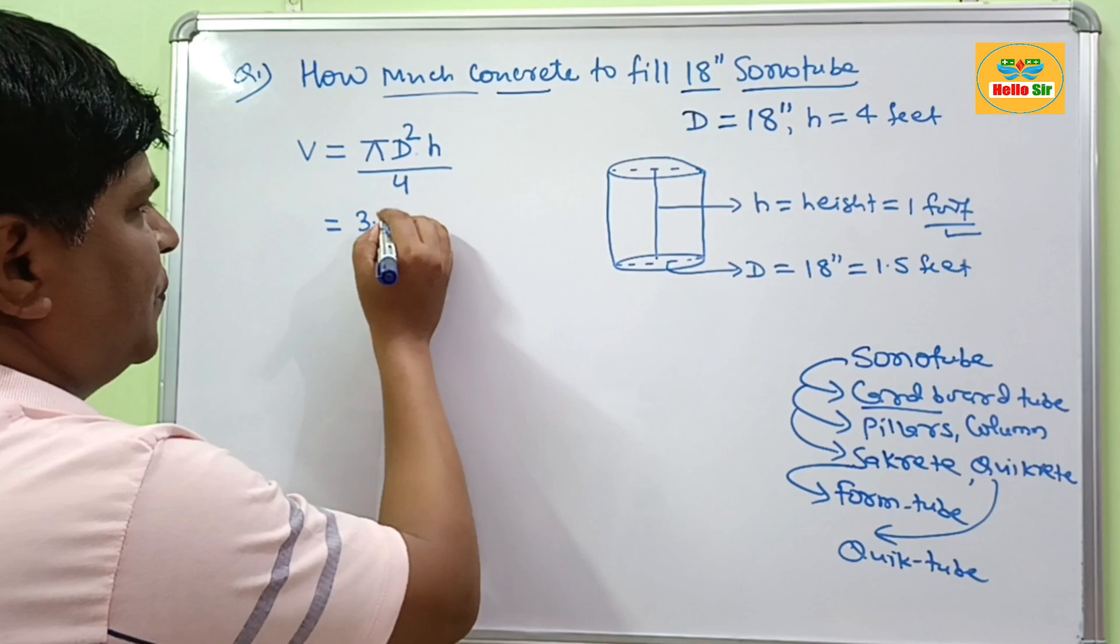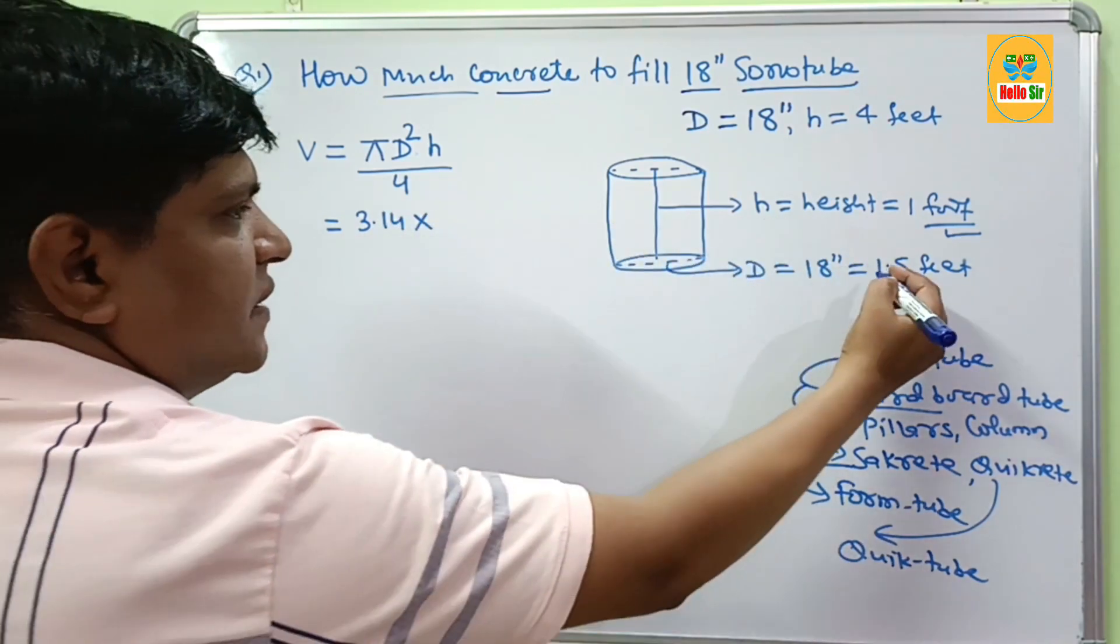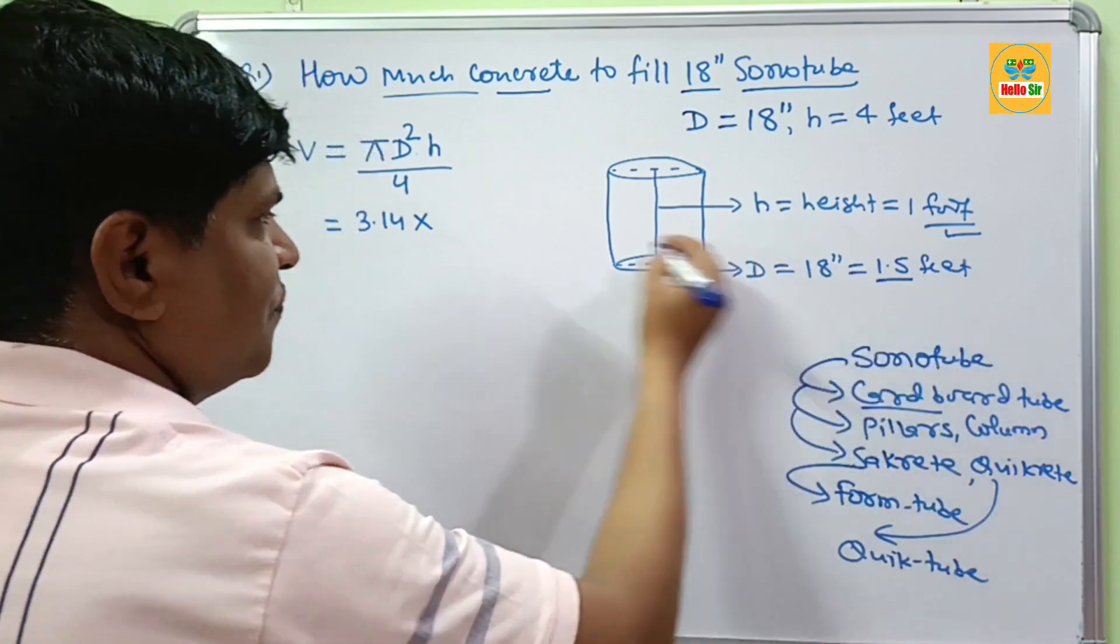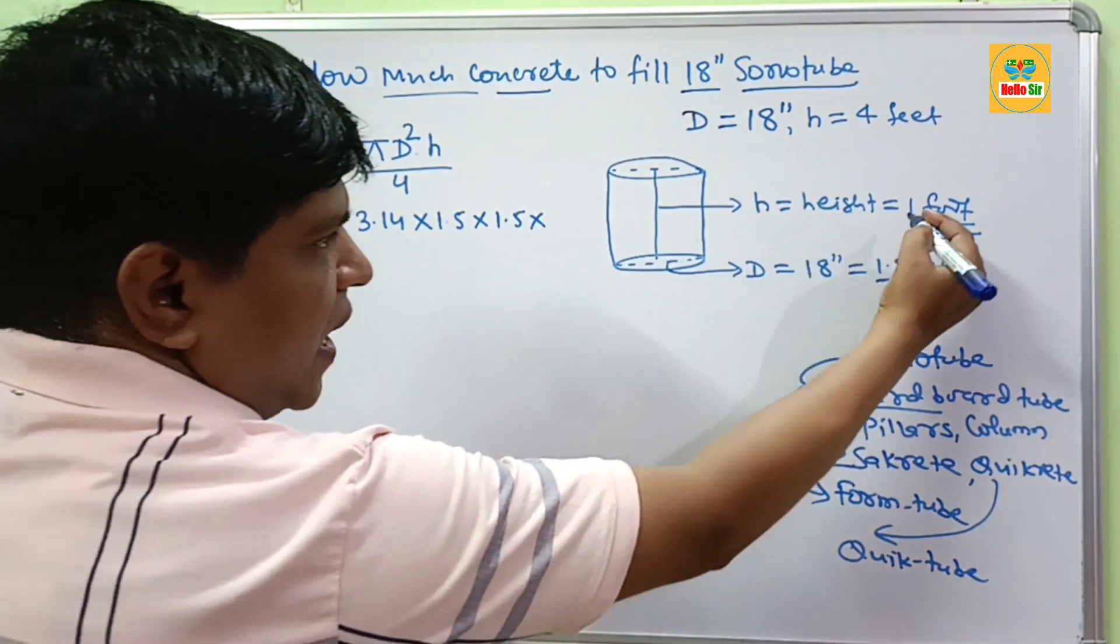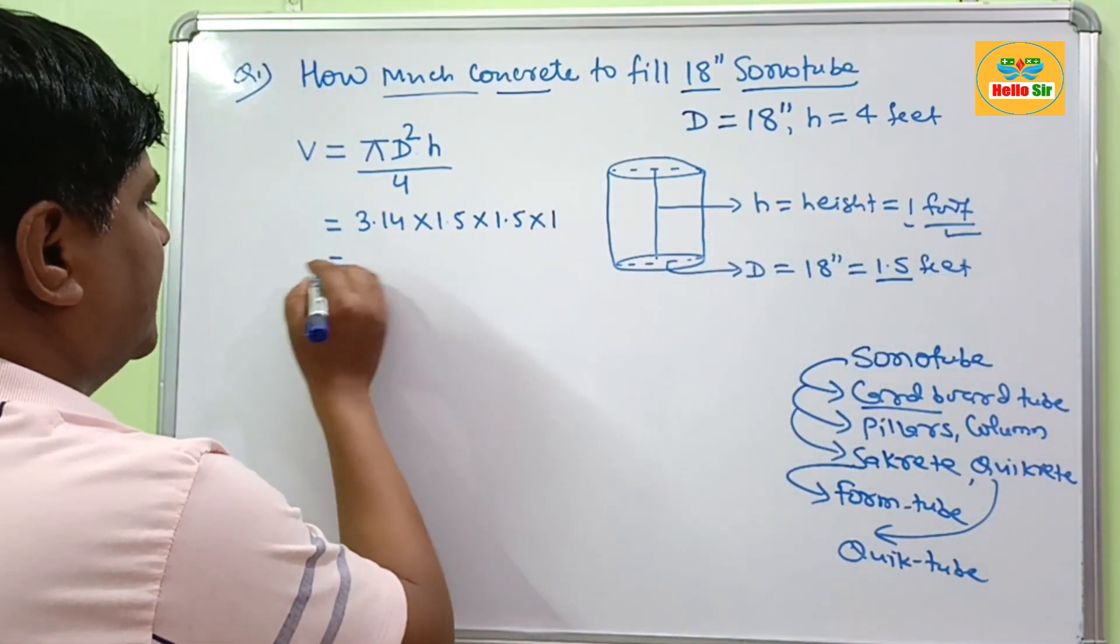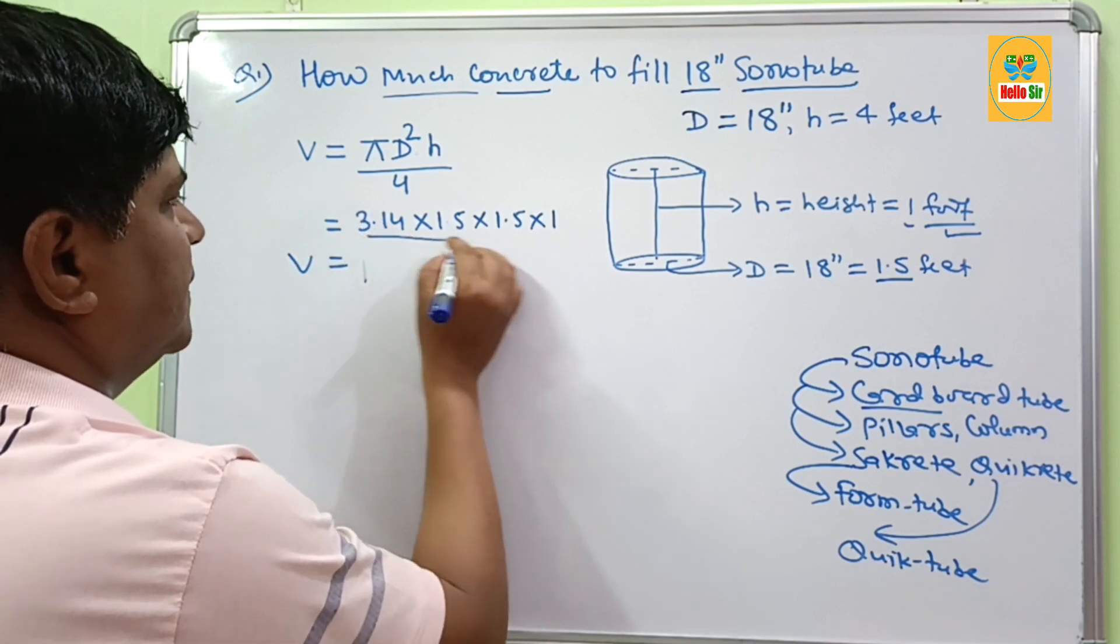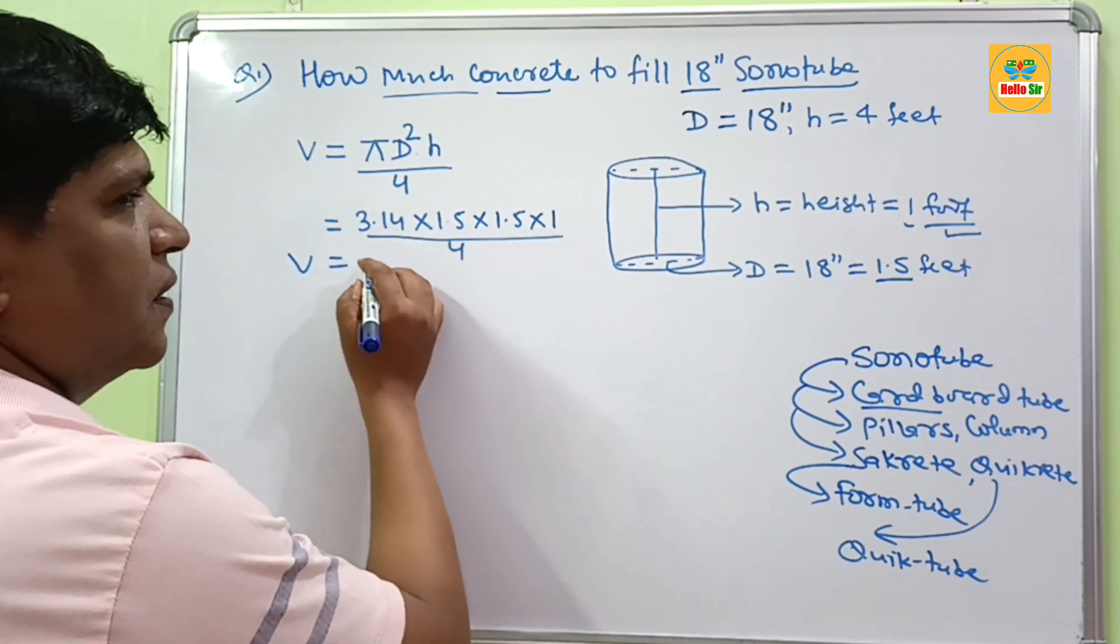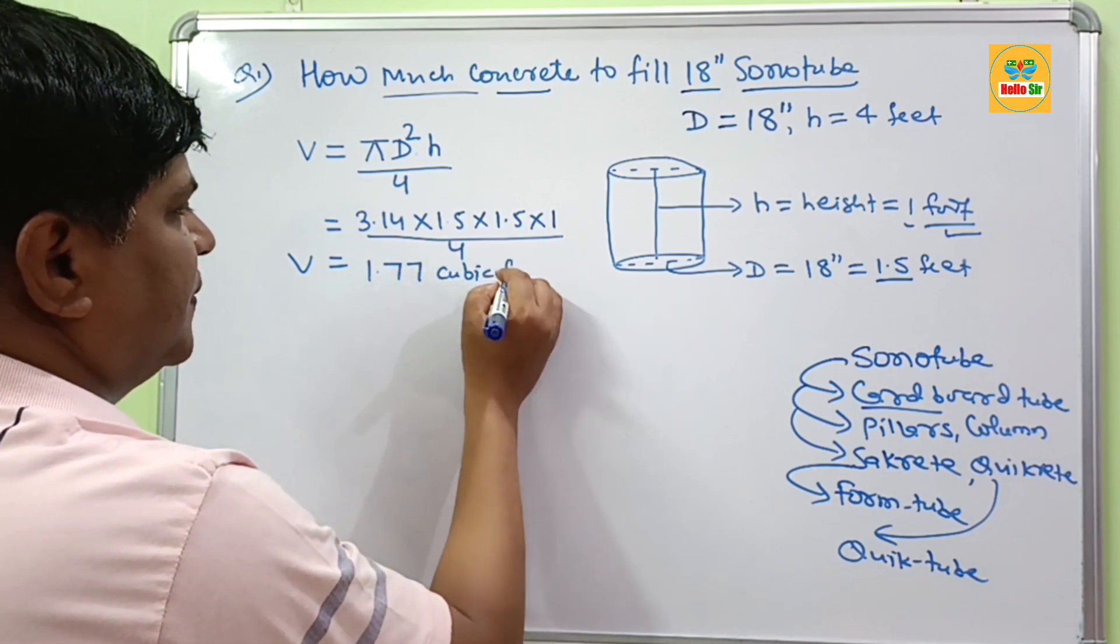π is equal to 3.14, D is diameter 18 inches, so we put 1.5 feet times 1.5 feet, and height is 1 foot. This will come about, divided by 4, this will come about 1.77 cubic feet.